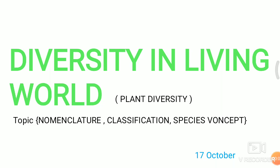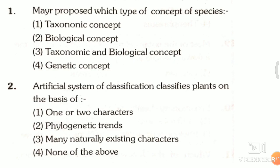Hello friends, welcome back. Today we will discuss 20 questions on chapter Diversity in Living World. Our topics include nomenclature, classification, species concepts. Question 1: Mayr proposed which type of concept of species? First, taxonomic concept. Second, biological concept. Third, taxonomic and biological concept. Fourth, genetic concept. The answer is the second one, that is the biological concept.